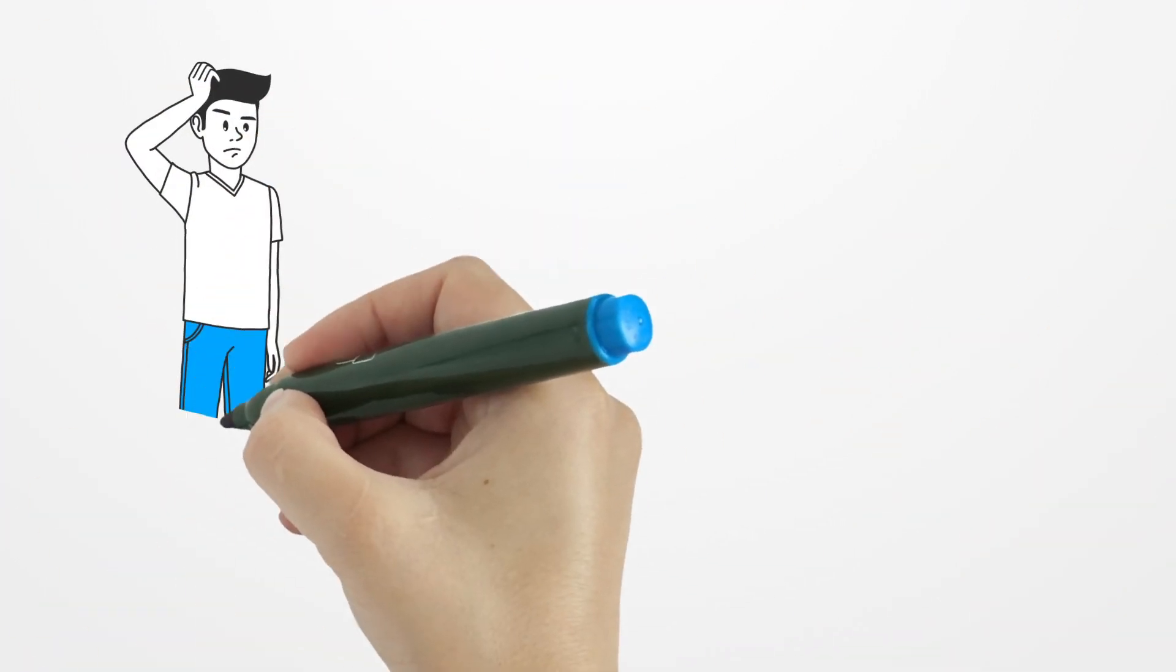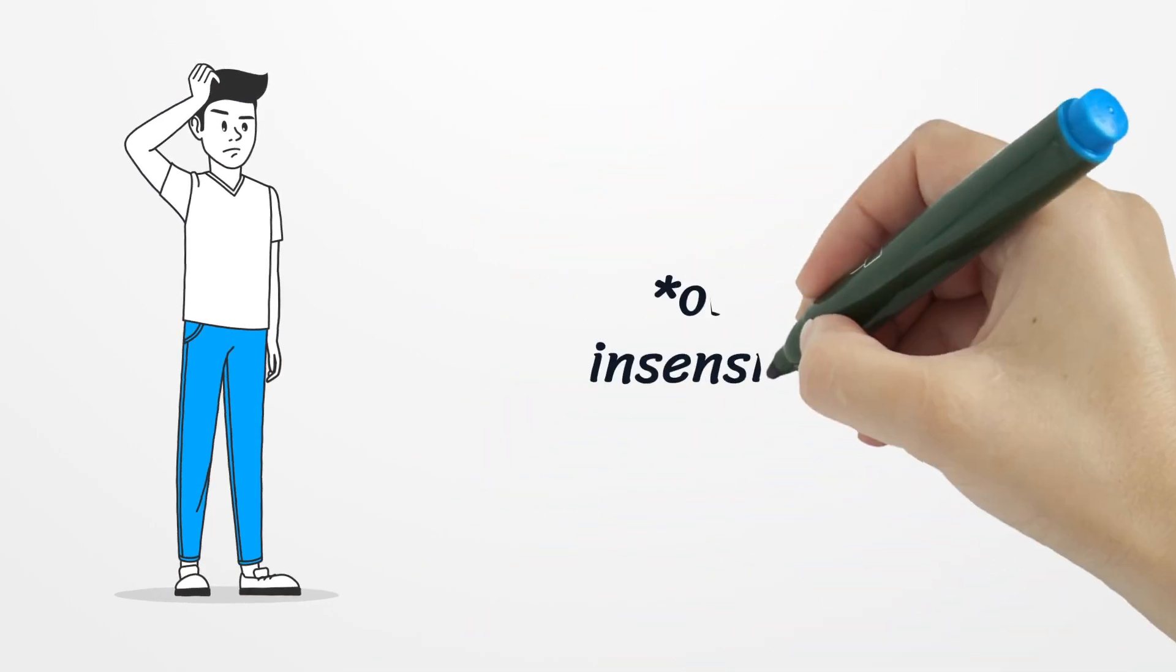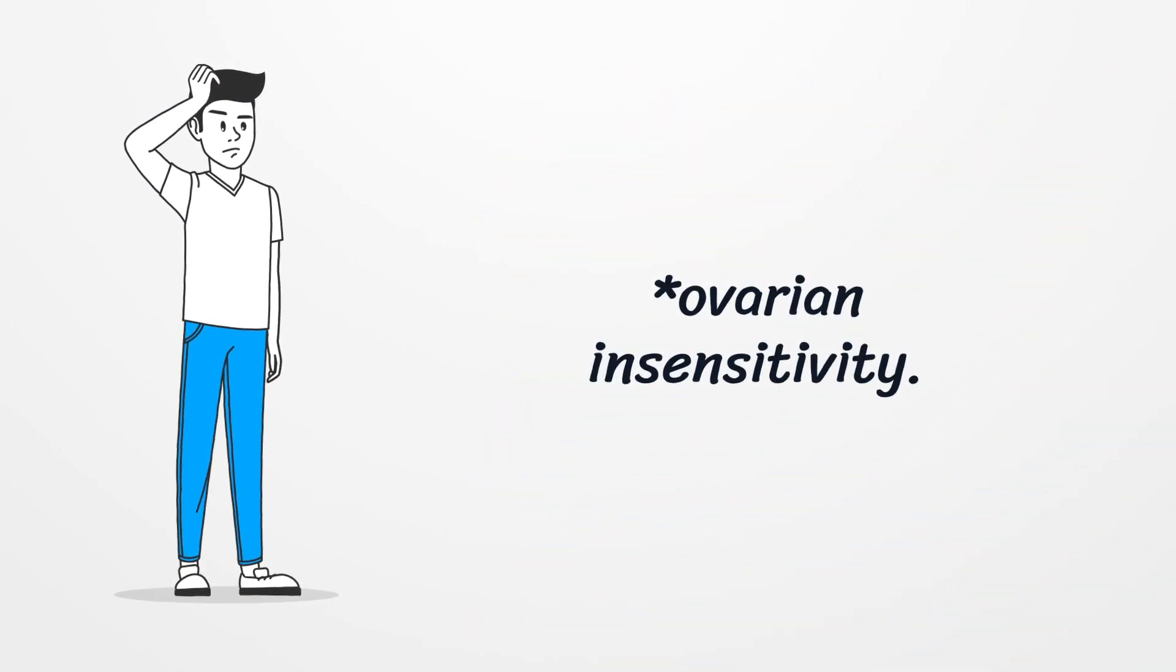Ovarian insensitivity to gonadotropins, a hormonal disturbance, leads to amenorrhea and an absence of secondary sex characteristics.